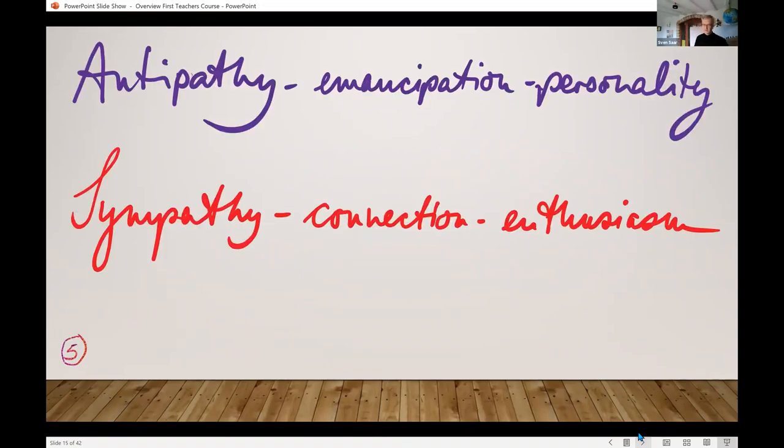In lecture five, Steiner reminds us sympathy and antipathy are not the same as positive and negative. Your child needs to feel antipathy towards you, absolutely vital from birth. Otherwise they'll stay in your womb. Their whole life journey is emancipation - they need to be antipathetic towards you. They need to know their boundaries, I am not you. If I don't feel that I'll never develop personality. But I also need to learn the art of connecting and developing enthusiasm.